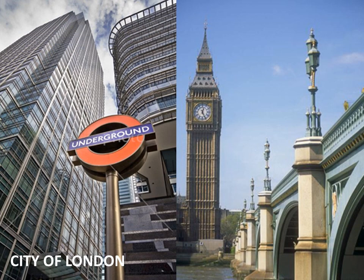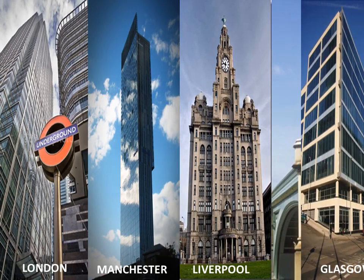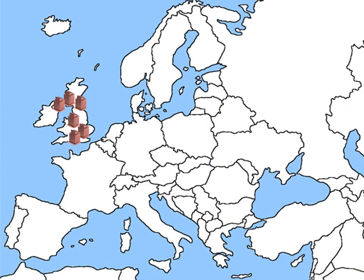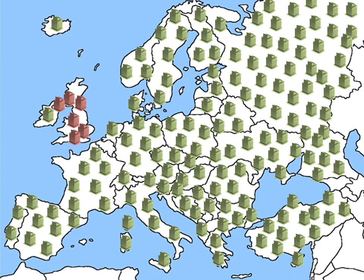These are just two of over 120,000 commercial buildings in London, which is one of 50 cities in the UK, which is one of over 200,000 cities in Europe. So you can see the huge potential of the RACUS ceiling tile in commercial buildings for retrofit and new build projects worldwide.